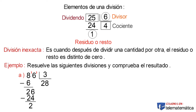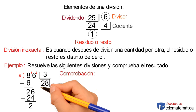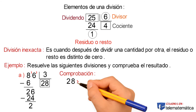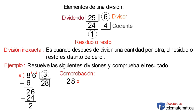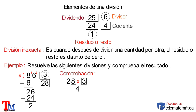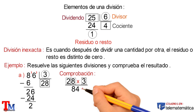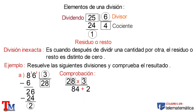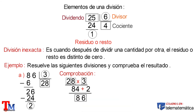Para verificar que el proceso realizado está correcto, realizaremos la comprobación. Para ello, simplemente multiplicamos el cociente y el divisor. Resolviendo esta operación: 3 multiplicado por 8 es igual a 24; escribimos el 4 y llevamos 2. Y 3 por 2 es igual a 6, y 2 que llevamos son 8. A este resultado le sumamos el residuo obtenido, que sería el 2, y resolviendo la operación nos quedaría 86. Como el resultado es igual al valor del dividendo, entonces el proceso realizado es correcto.